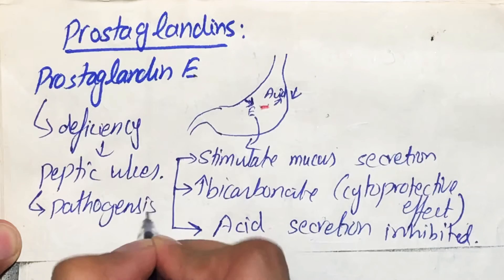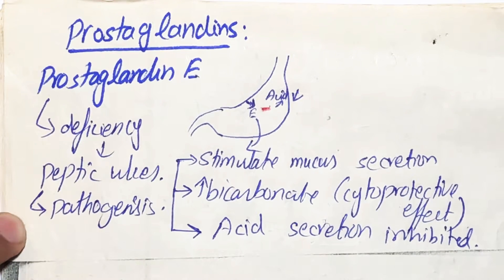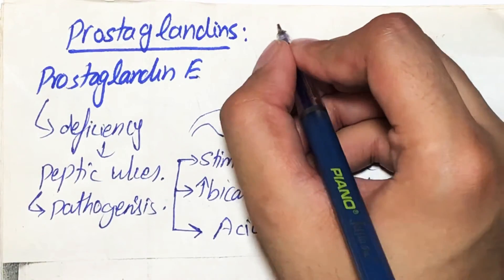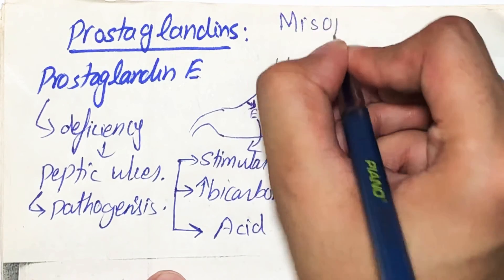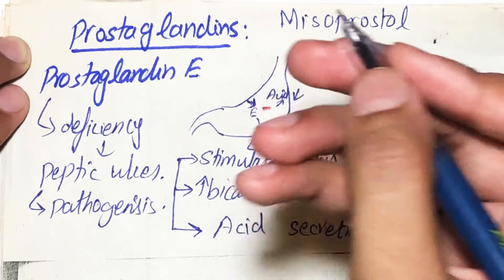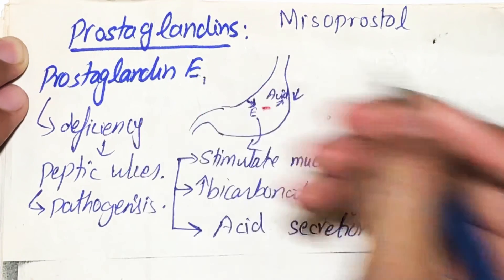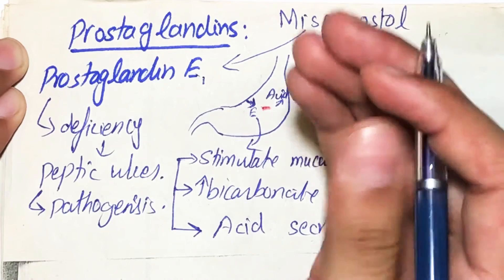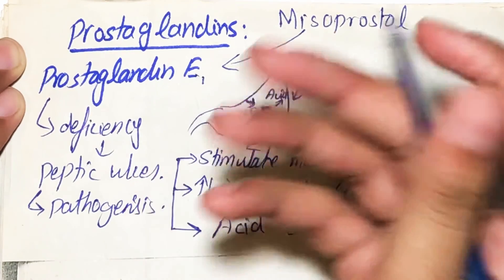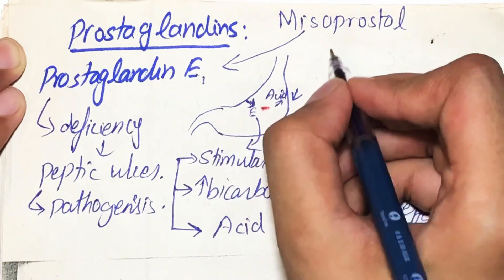In every disease, when there is a decrease of something, we give that patient something externally which has an analogous effect. So in this case we use misoprostol, which is actually an analog of prostaglandin E1. What will happen is that misoprostol will bind to prostaglandin receptors.